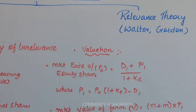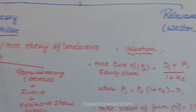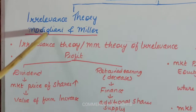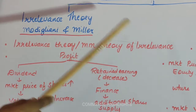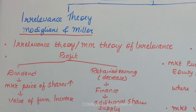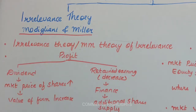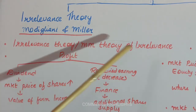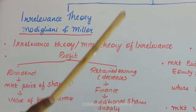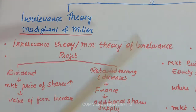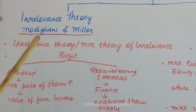Let us discuss the first theory, which is proposed by Modigliani and Miller — that is the MM theory of dividend. Modigliani and Miller say that dividend theory is irrelevant, meaning dividend payments do not have any effect on the profitability of the company.